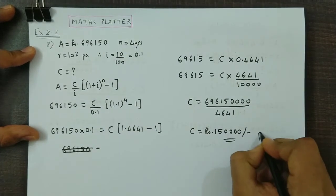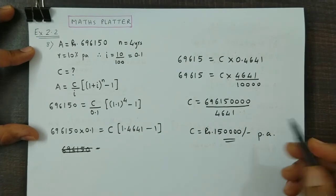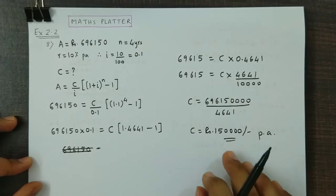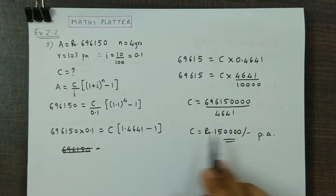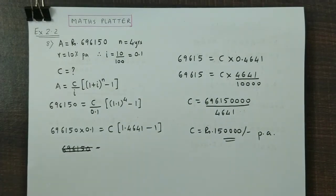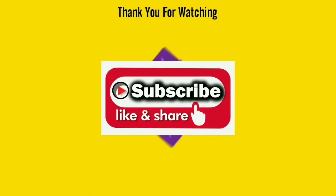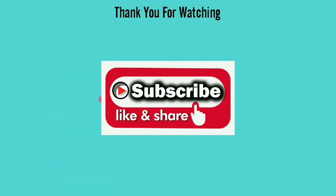This is 150,000 per annum. It's completely divisible. So, this is how you obtain the installment per annum. Like it, share it, and subscribe to our channel for more such interesting videos. Thank you.